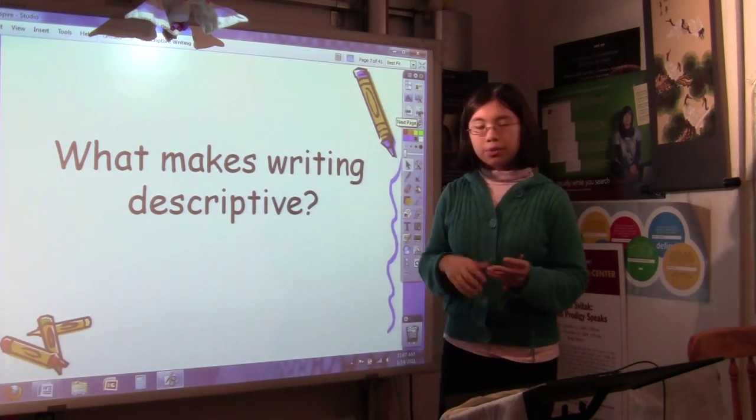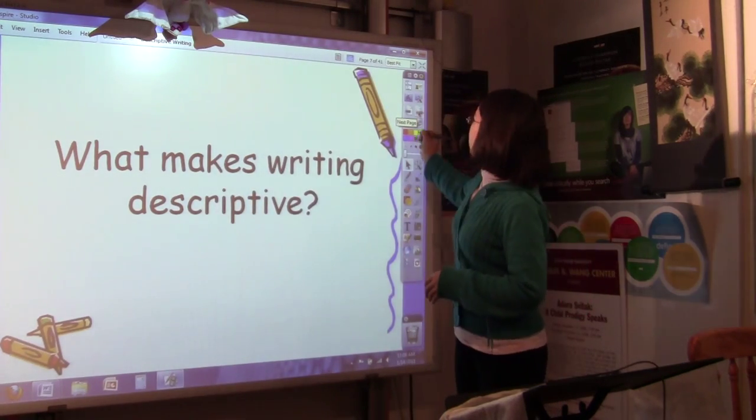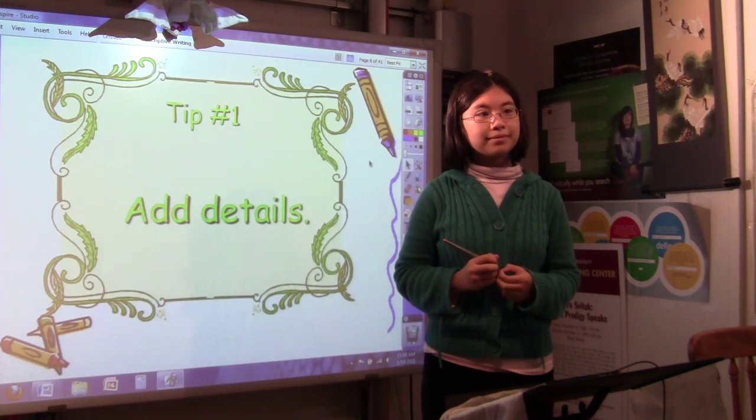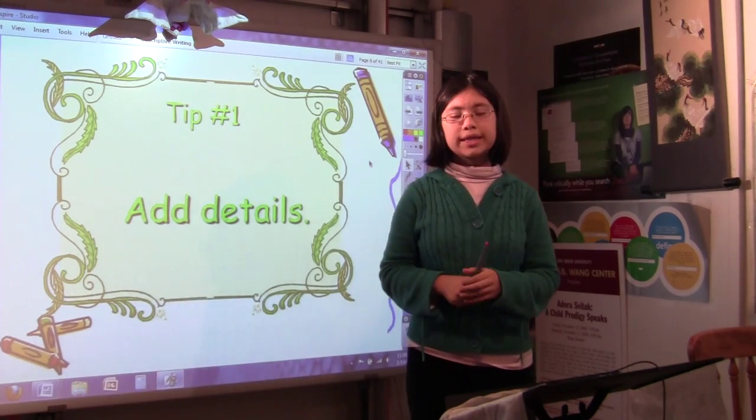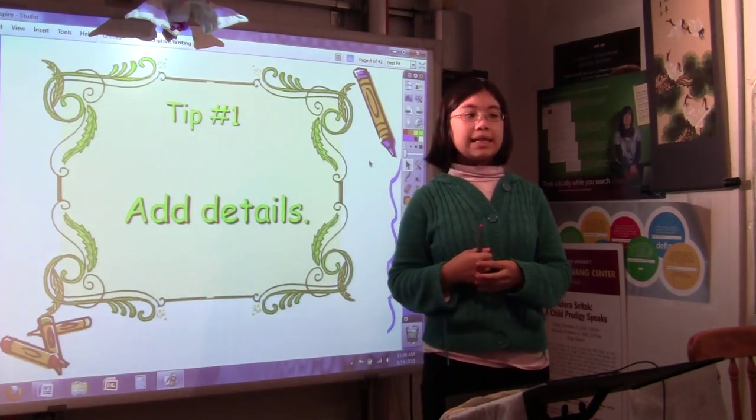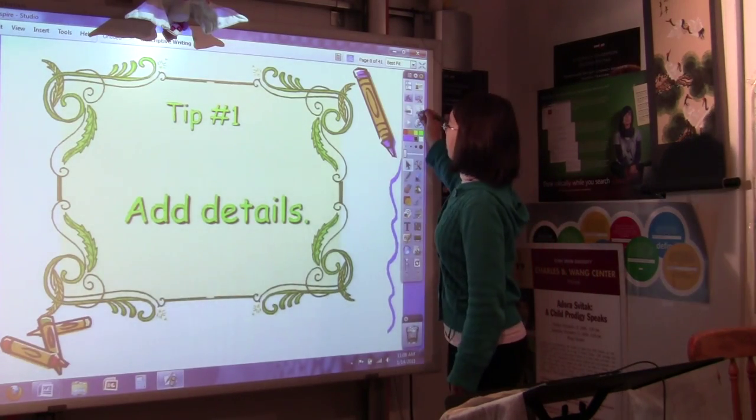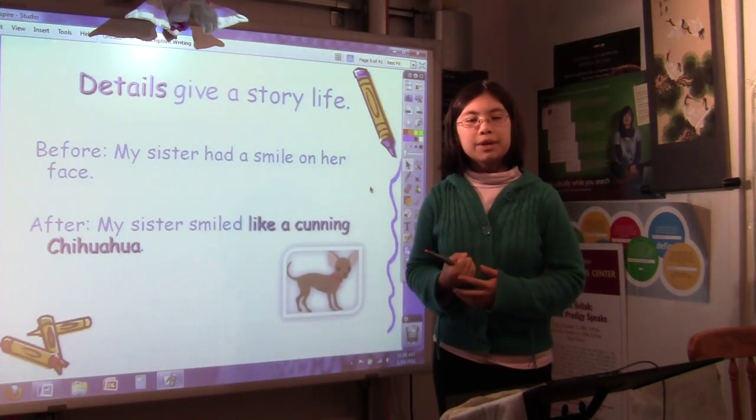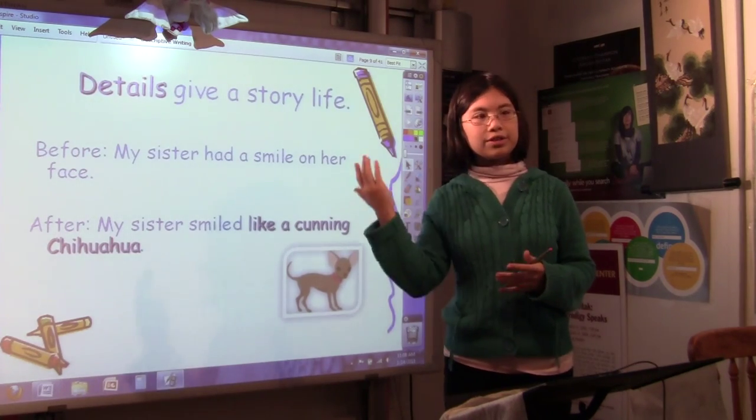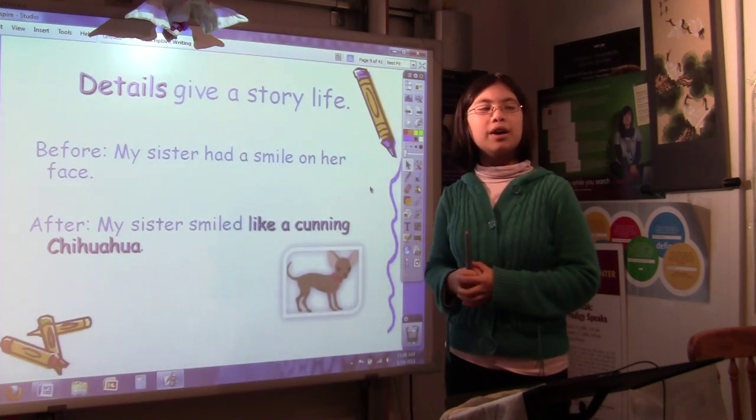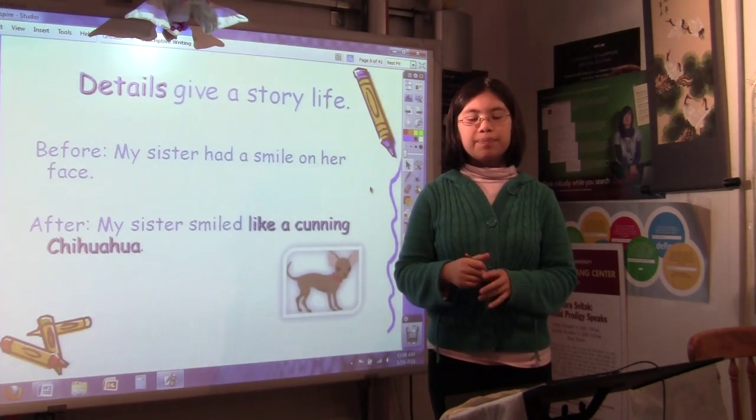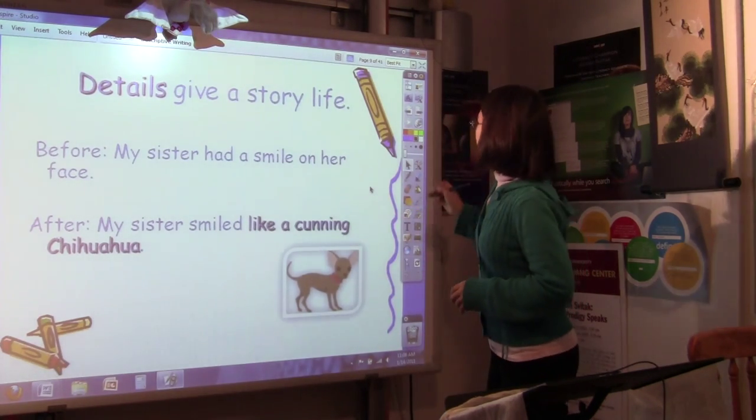One of the first steps you can take when you're writing is to add details. Details are the extra things that you need to know about something. You could just say something like, the creature entered the area, but why just say that? You could add so many details about what the creature looks like, what kind of creature it is. There's a few more reasons to add details. Basically, they make reading more fun. They can give a story life. Before, you might say something like, my sister had a smile on her face. So it gets the point across. Your sister was smiling. But you could say something like, my sister smiled like a cunning chihuahua, which makes it seem a little bit more maybe frightening or humorous for the reader. So adding details like that, that capture more of the moment, that capture more of the image, which could be great for the story.